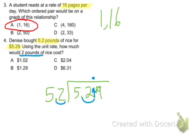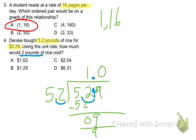52 goes into 52 one time. That's 52 minus, get 0. Bring down the 9. 0 times. 0 minus, get 9.